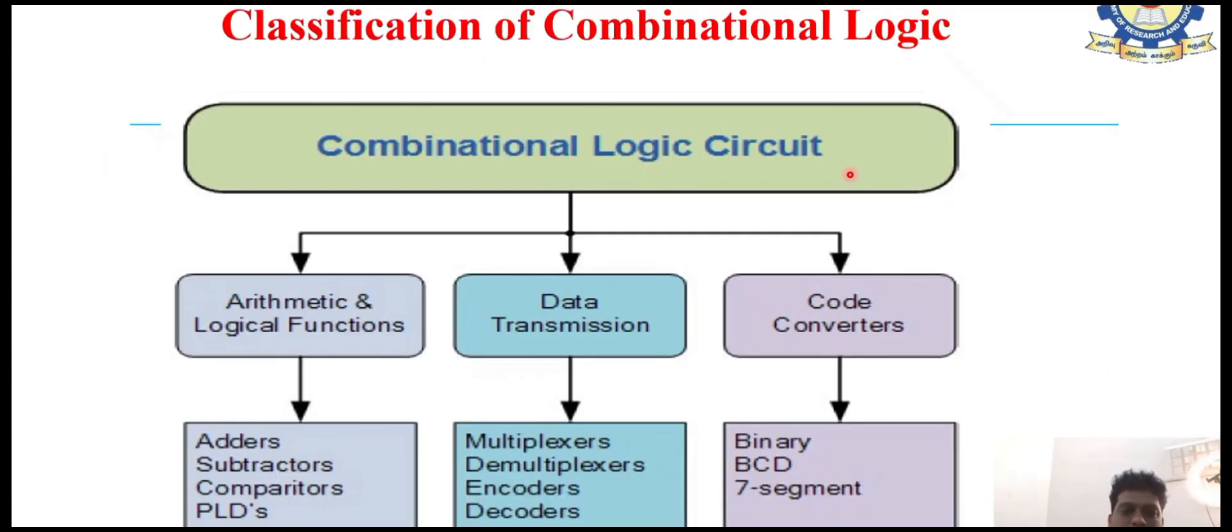Combinational logic circuits are used to perform ALU operations, data transmission, and code conversion. ALU operations include adders, subtractors, comparators such as magnitude comparators and identity comparators, and programmable logic devices. For data transmission, we use MUX and DMUX, then coders, encoders, and decoders. For code conversion, we have binary to gray, gray to binary, BCD to XS3, and importantly, BCD to seven-segment display.